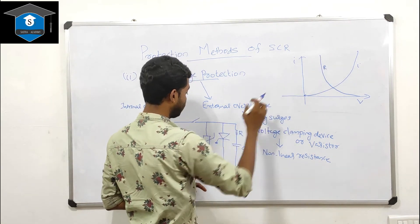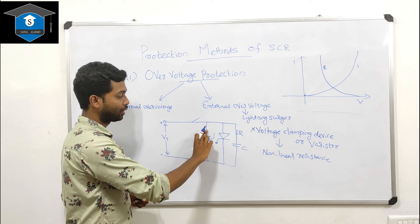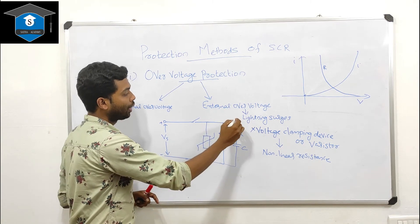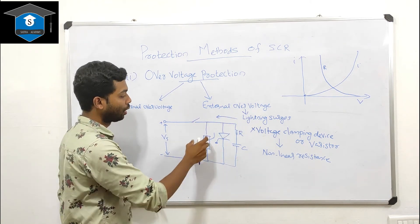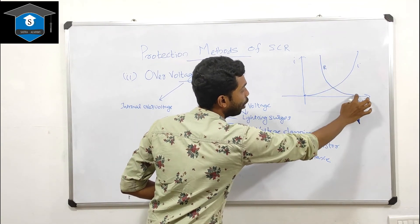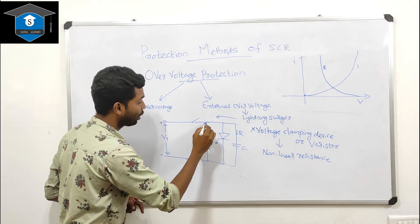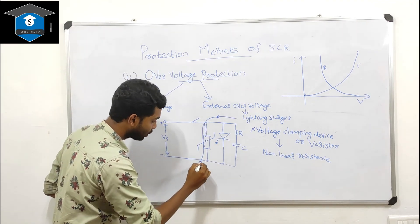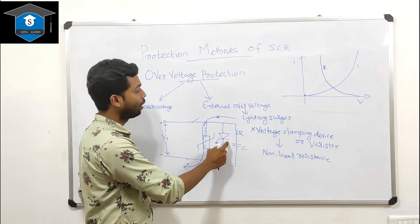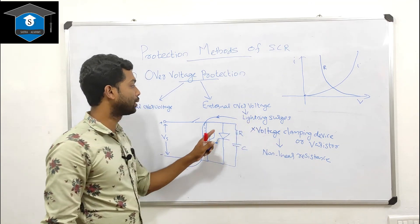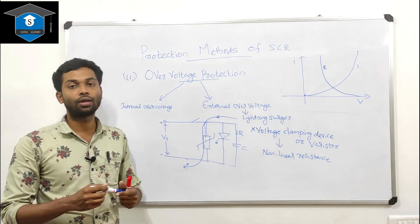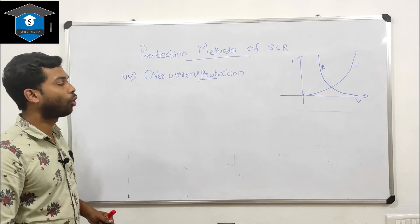When resistance is maximum, the device draws only a very small leakage current. When a heavy voltage surge occurs, the voltage increases and the resistance decreases, offering a short-circuit path that bypasses the high-magnitude voltage surge. This is the over-voltage protection for the SCR.